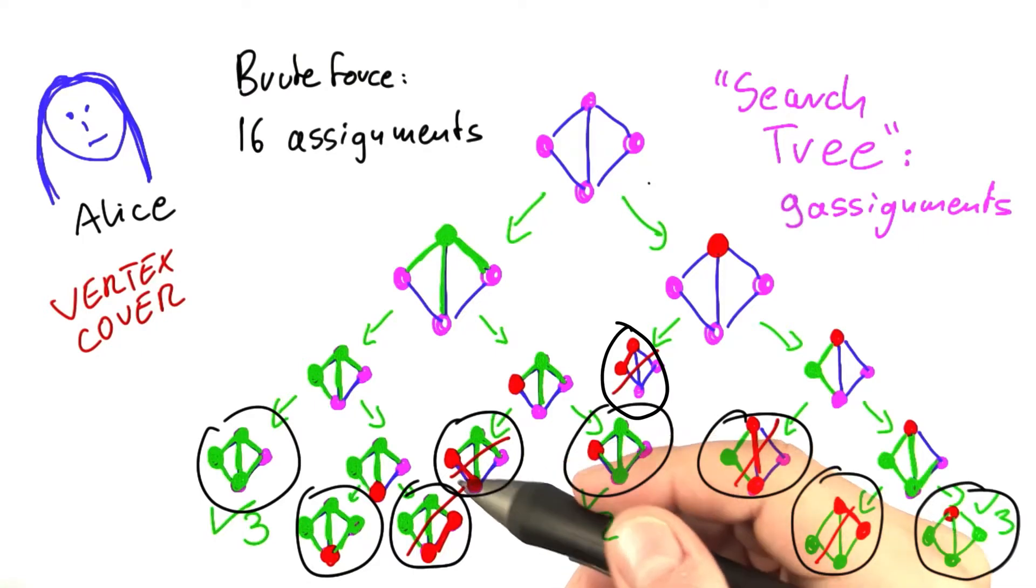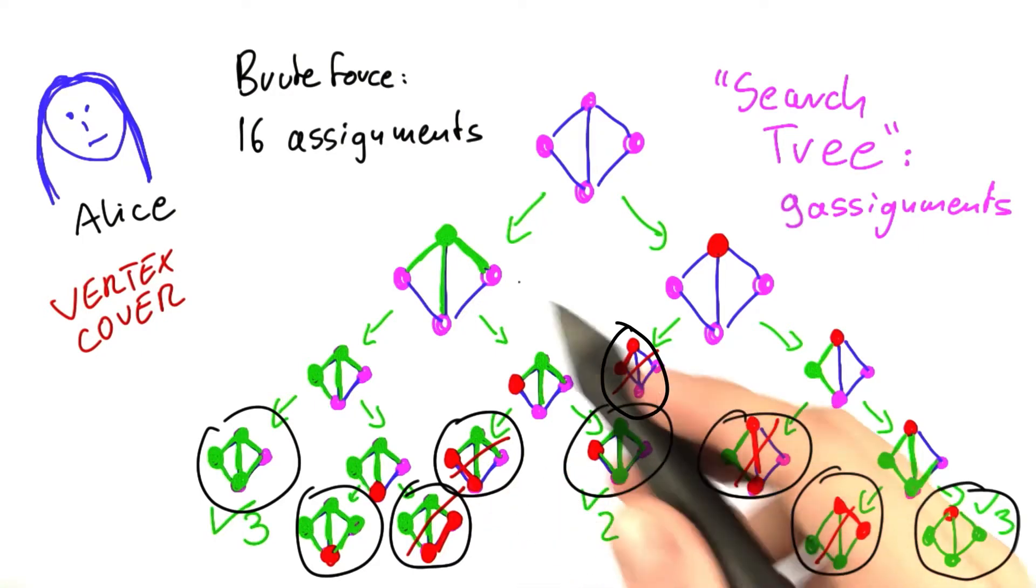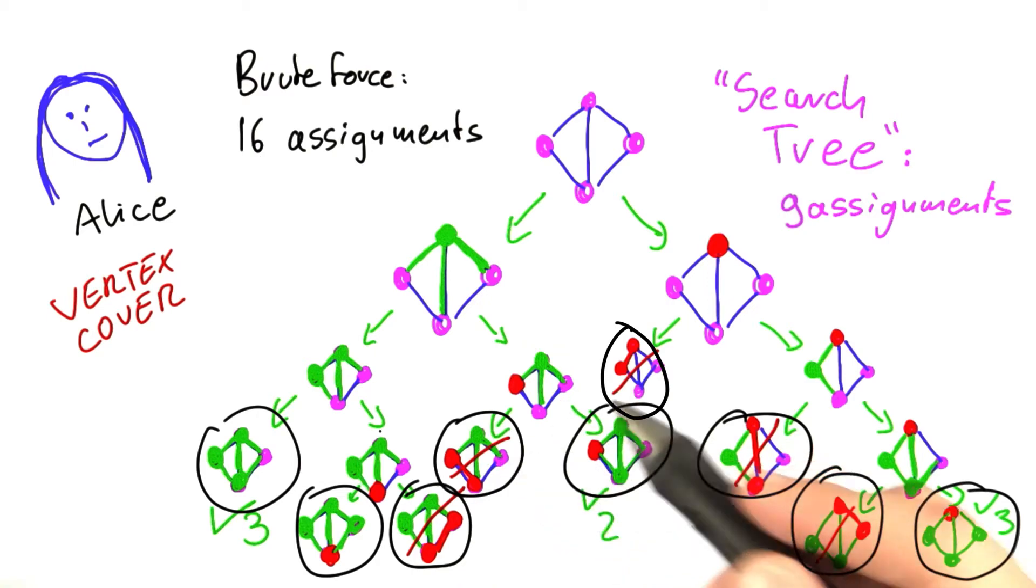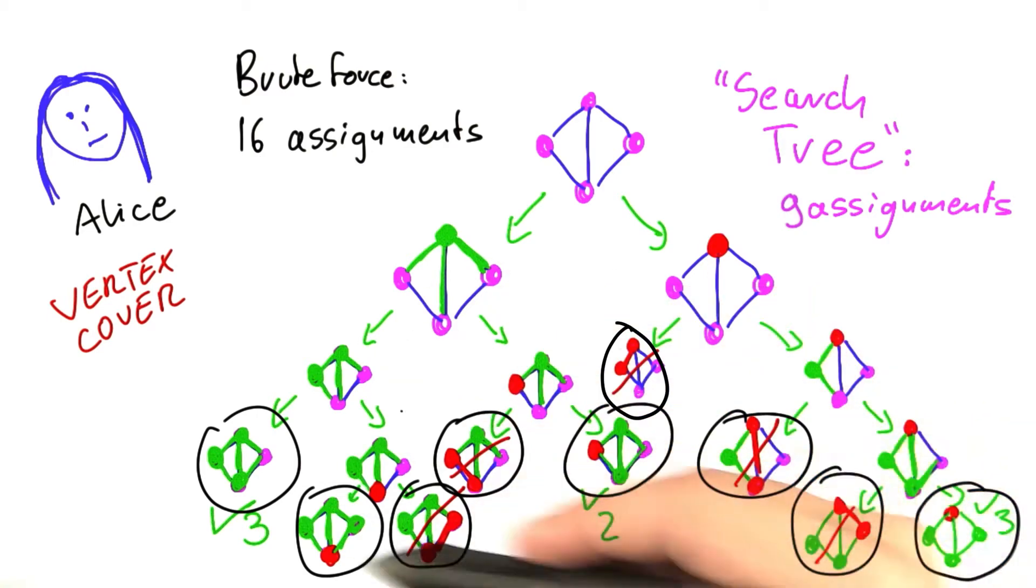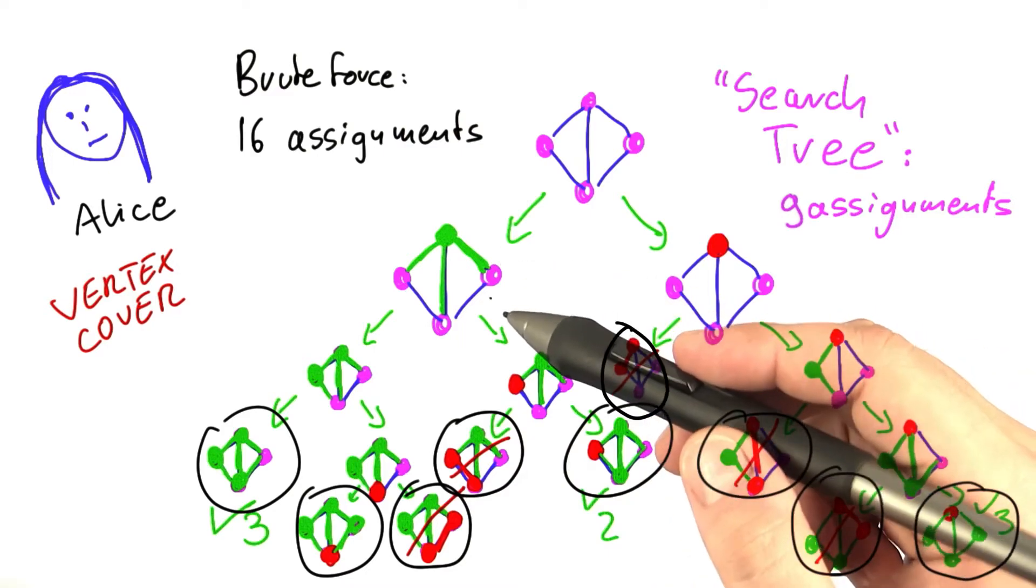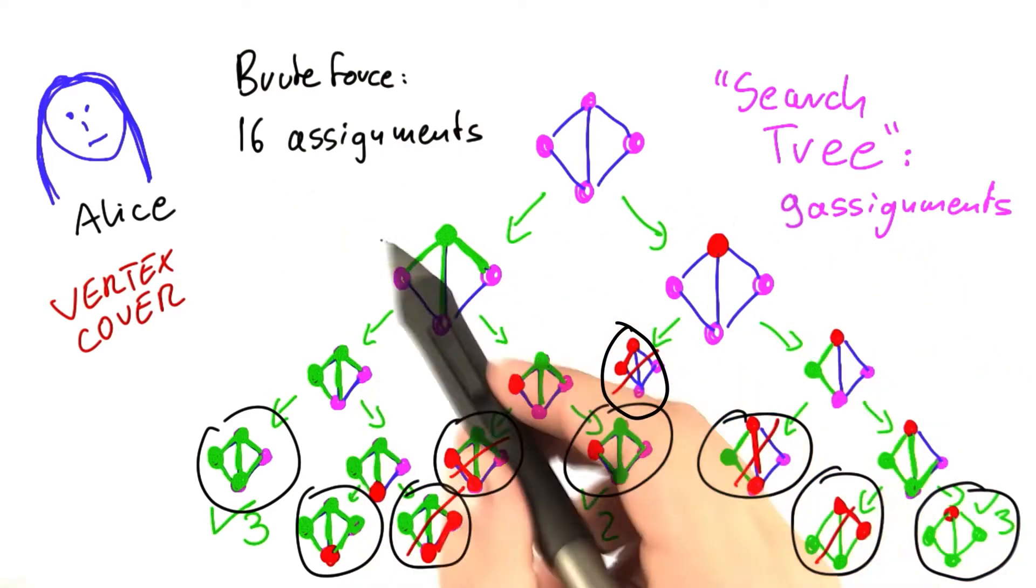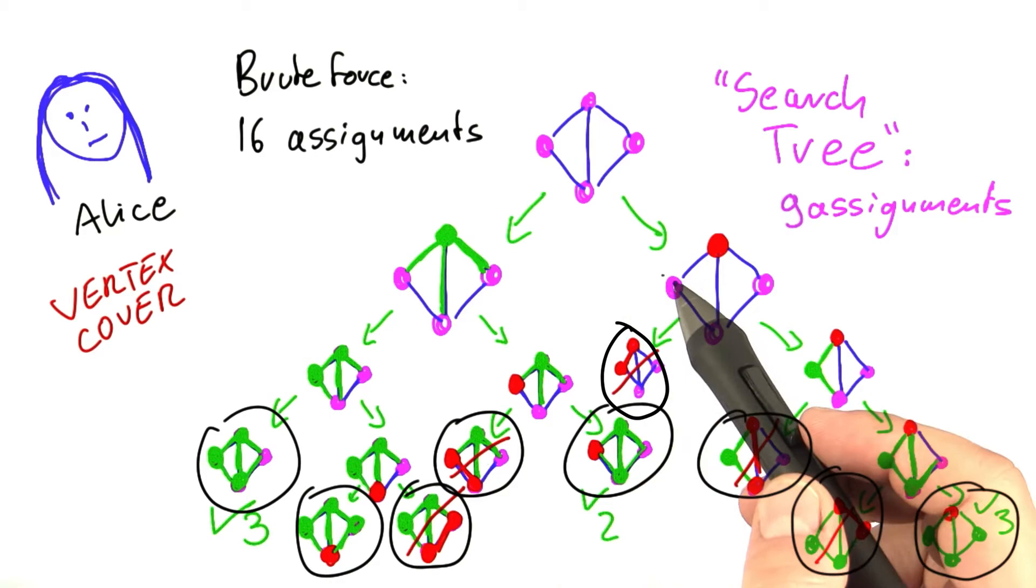So using the search tree for practical purposes, we may have already gained some efficiency. But now the question is, does it really affect the running time of the algorithm when we use O notation and worst case running time? Or is it just something that gives us some constant factor savings in practice?